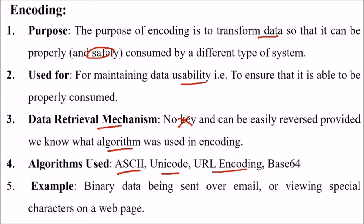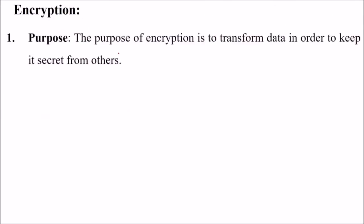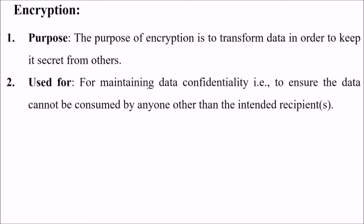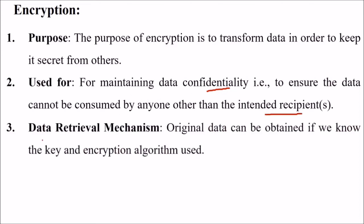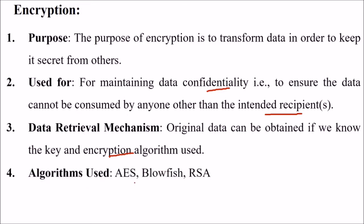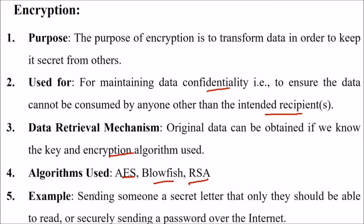An example of encoding is binary data being sent over email or using special characters on a webpage. Encryption's purpose is to transform data in order to keep it secret from others — it is used for maintaining data confidentiality, ensuring that the data cannot be consumed by anyone other than the intended recipients. The original data can be obtained if we know the key and the encryption algorithm used. Algorithms used include AES, Blowfish, and RSA. An example is sending someone secret data that only they should be able to read, or securely sending a password over the internet.